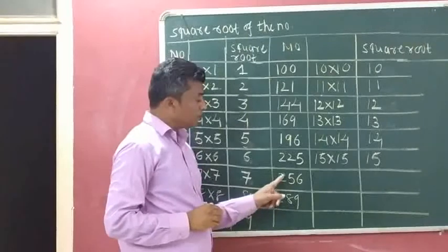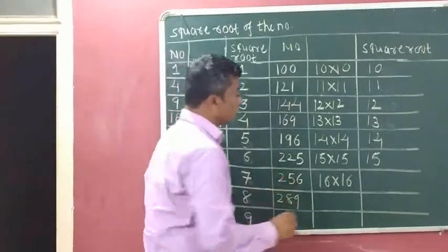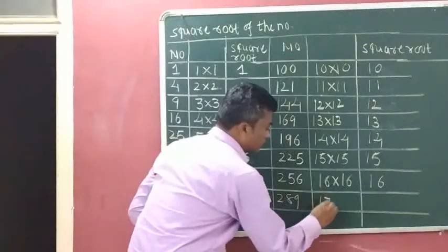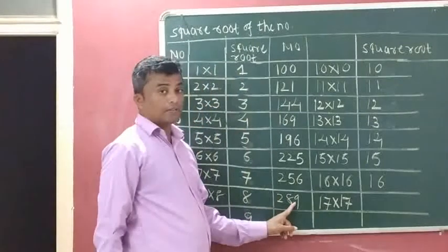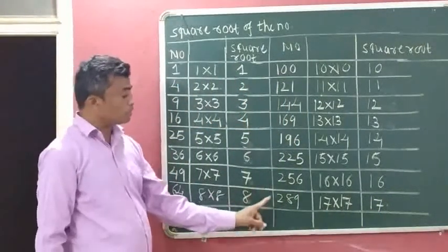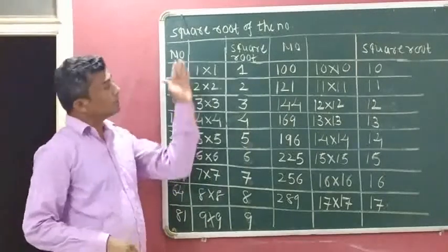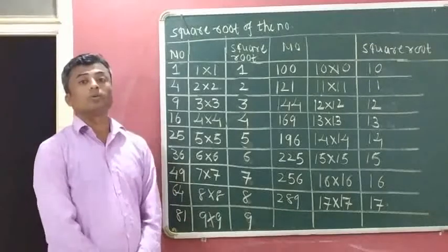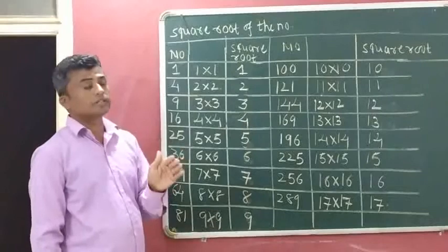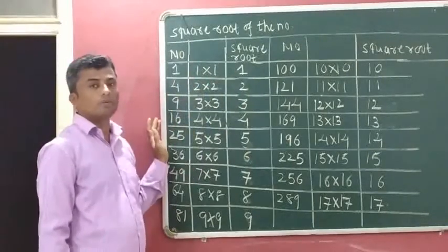Square root of 256: 16 times 16 is 256, so square root of 256 is 16. Square root of 289: 17 times 17 is 289, so square root of 289 is 17. It is my request that you must remember the square roots from 1 to 289, as it is helpful for understanding the Pythagoras theorem where we directly use squares and square roots. I hope you understand square root of smaller numbers using the normal method. Thank you.